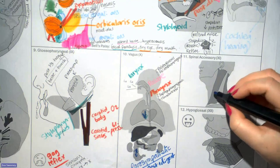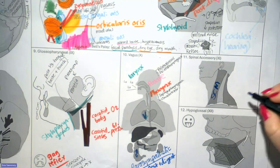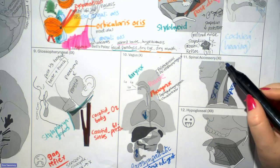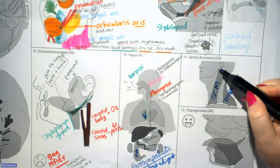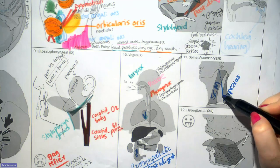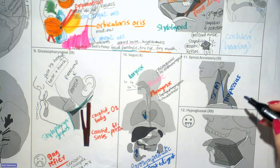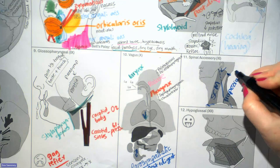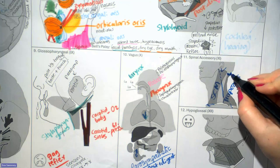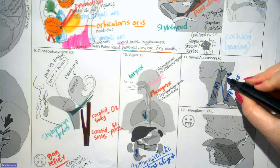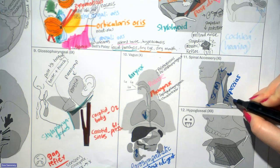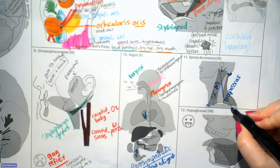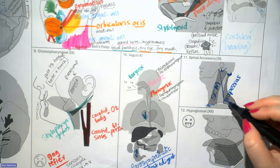Cranial nerve eleven is the spinal accessory nerve, innervating the sternocleidomastoid and the trapezius. The spinal accessory nerve runs down from the jugular foramen and crosses the space between the two muscles to run on their deep surface. The sternocleidomastoid goes from the mastoid process to the sternum and clavicle. The trapezius attaches to the superior nuchal line and external occipital protuberance, runs down along the nuchal ligament and spinous processes to T12, inserting on the clavicle, acromion process, and spine of the scapula.